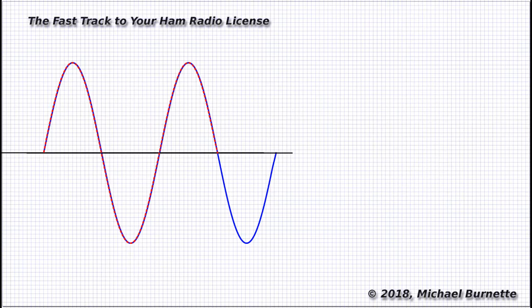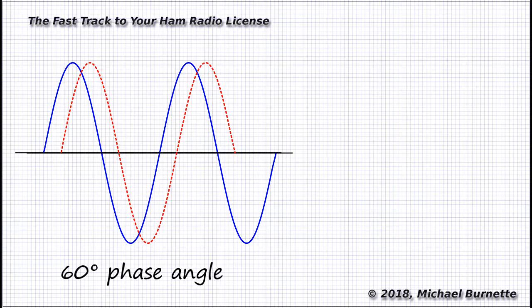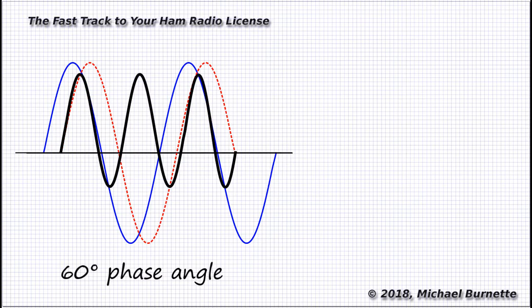At other phase angles, we get more real power and less reactive power. For instance, at 60 degrees of phase angle, it's a 50-50 split between productive power and reactive power. We end up with a power curve something like this.